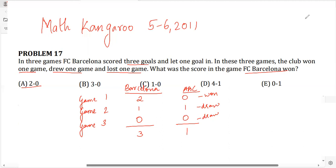Let's start with option B. Option B says that the winning score was 3-0. So this was 3-0, that means this was the game that they won.